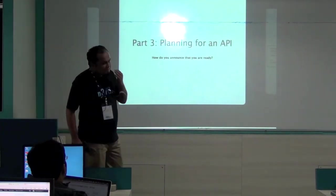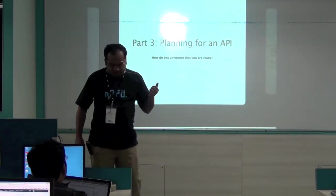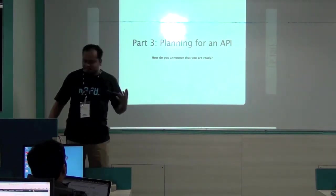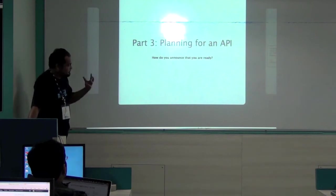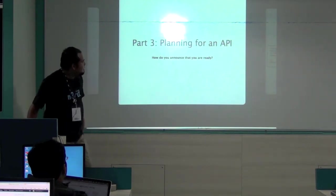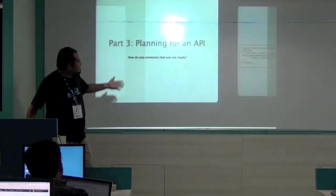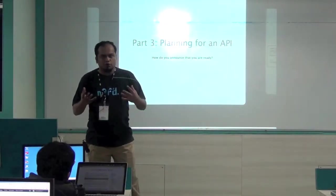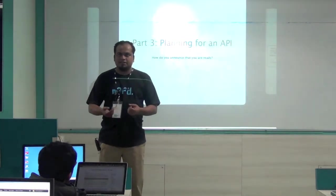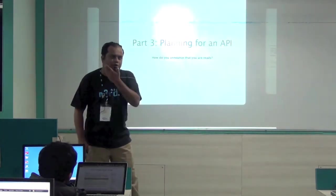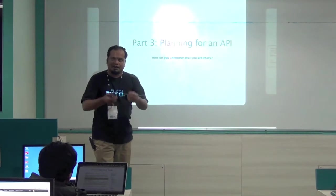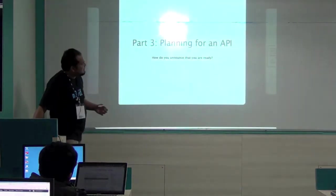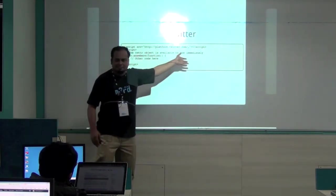That wraps up part two. Part three is about planning for an API — this was a revelation for me. The biggest challenge is: how do you announce that you are ready? If you're planning an API, you want to make an object available to people so they can interact with it. How do you make that object available? How do you announce that it's ready? Twitter makes it simple with a blocking script tag — once the script is done, you have the Twitter object. Except we discussed that blocking is a horrible idea.